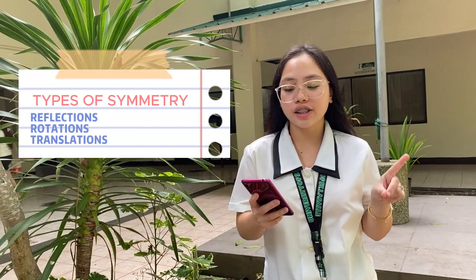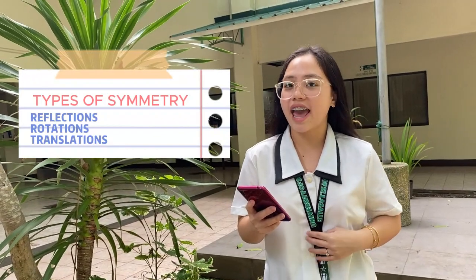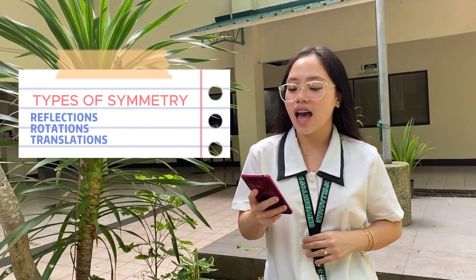There are many different kinds of symmetry. The most important ones are reflections, rotations, and translations — or less formally, flips, turns, and slides. Symmetry is when sides are equal, seen in similar images or items.